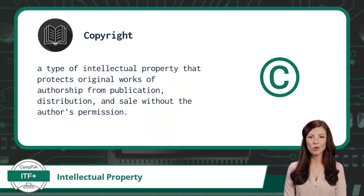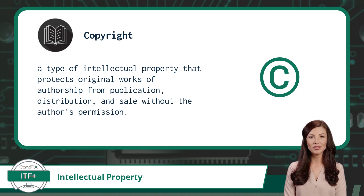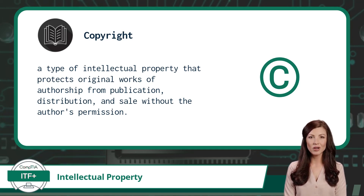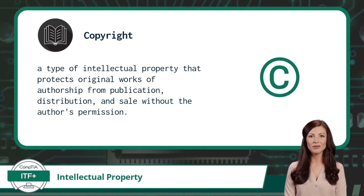Copyright is another type of intellectual property that protects original works of authorship from publication, distribution, and sale without the author's permission. One stipulation is that the work must be expressed in a tangible form — for example, a book would need to have been written on a physical medium like paper or published in order to be eligible for copyright protections. Copyright can extend to items like graphical images and logos, or even computer software programs.